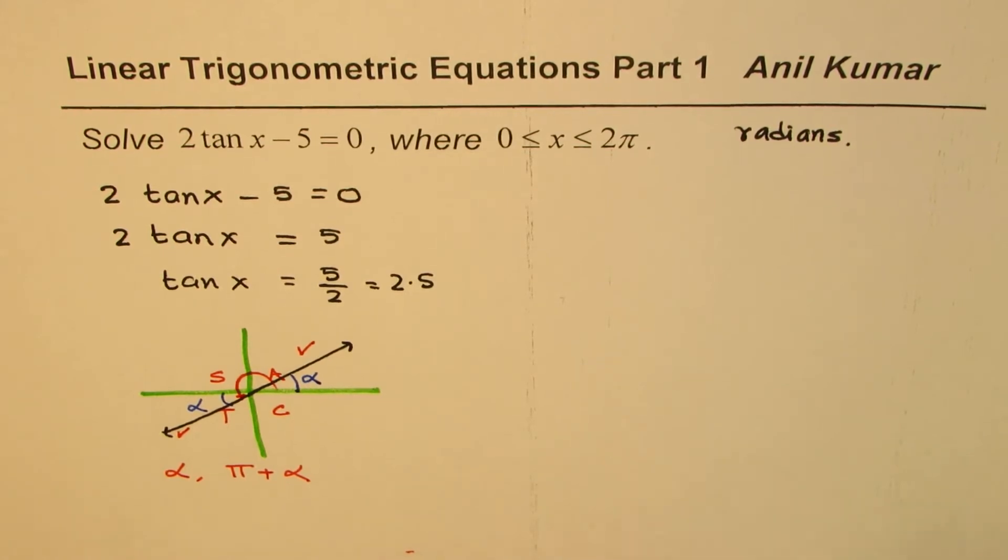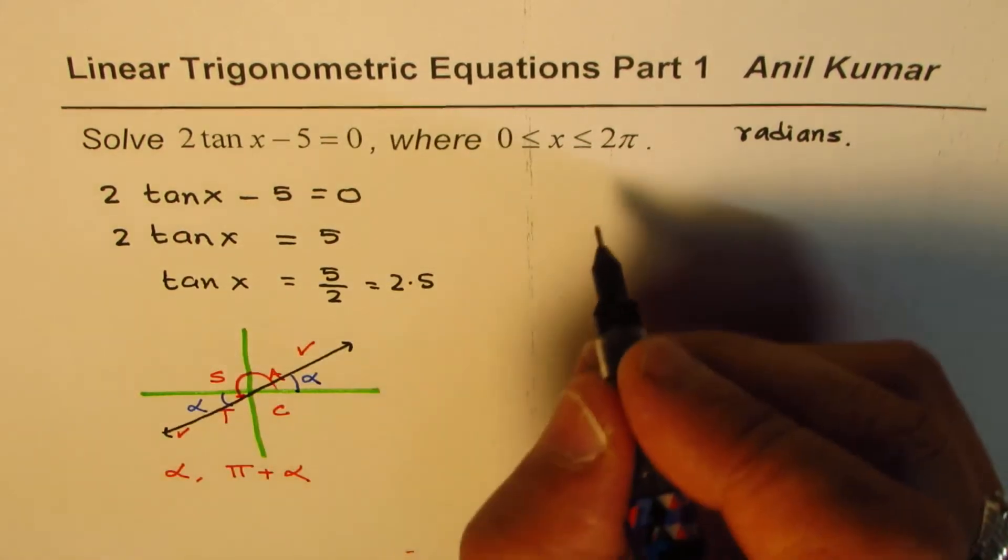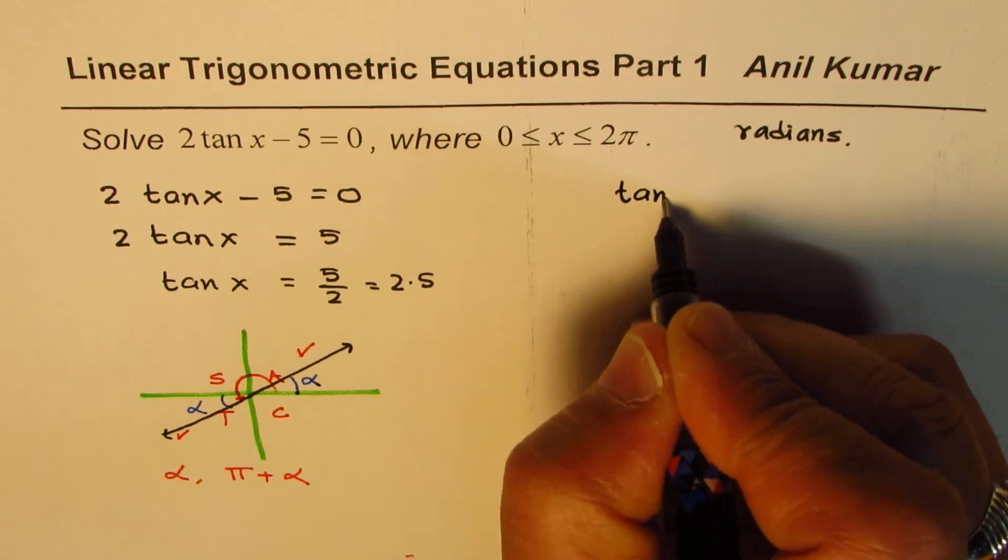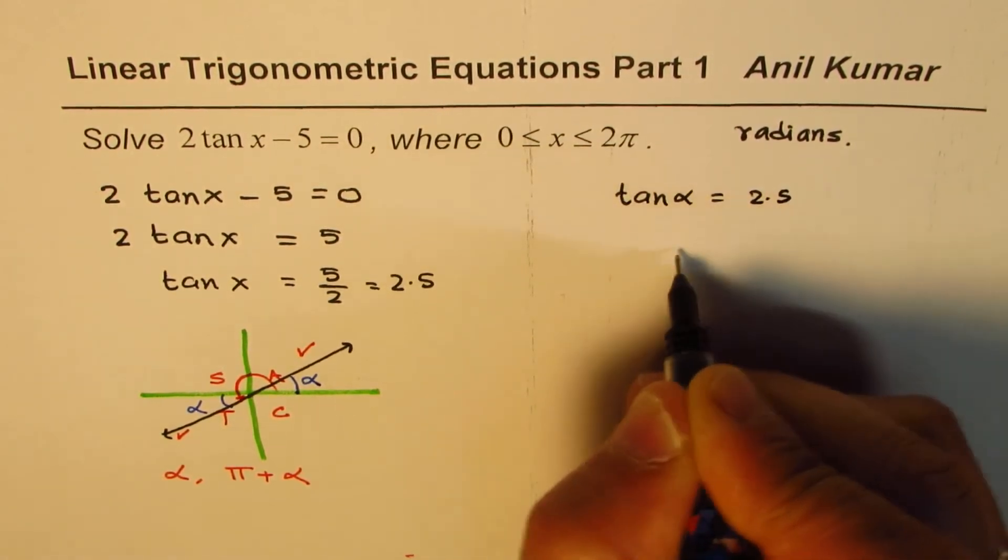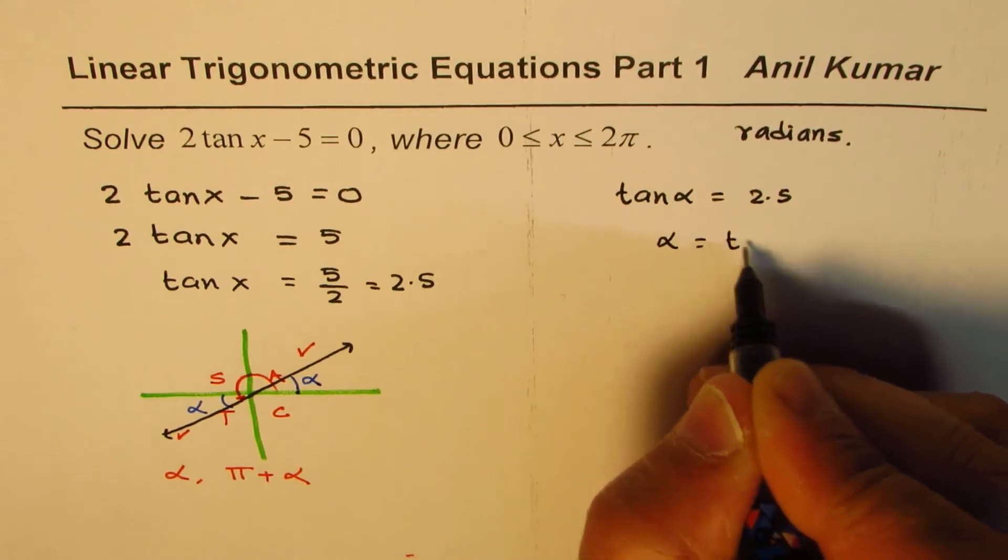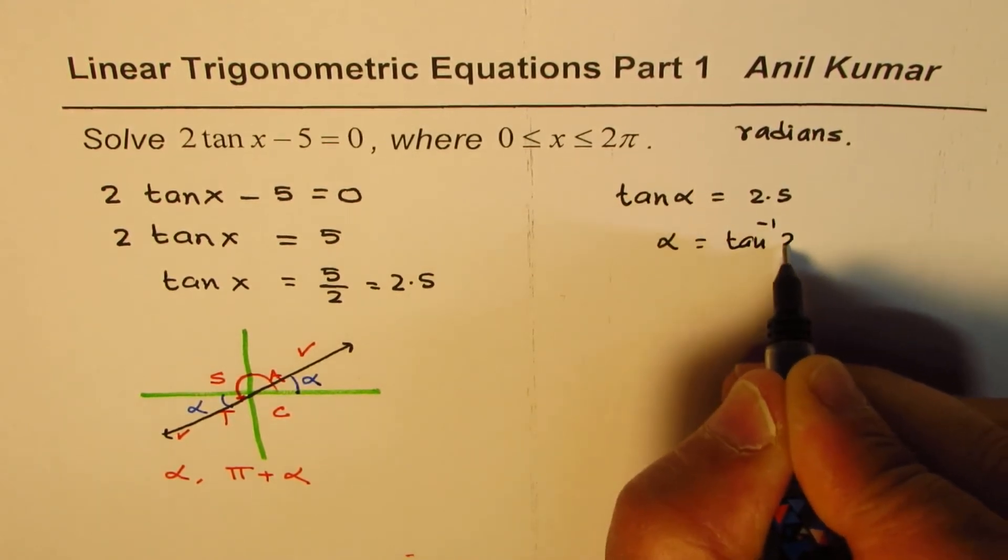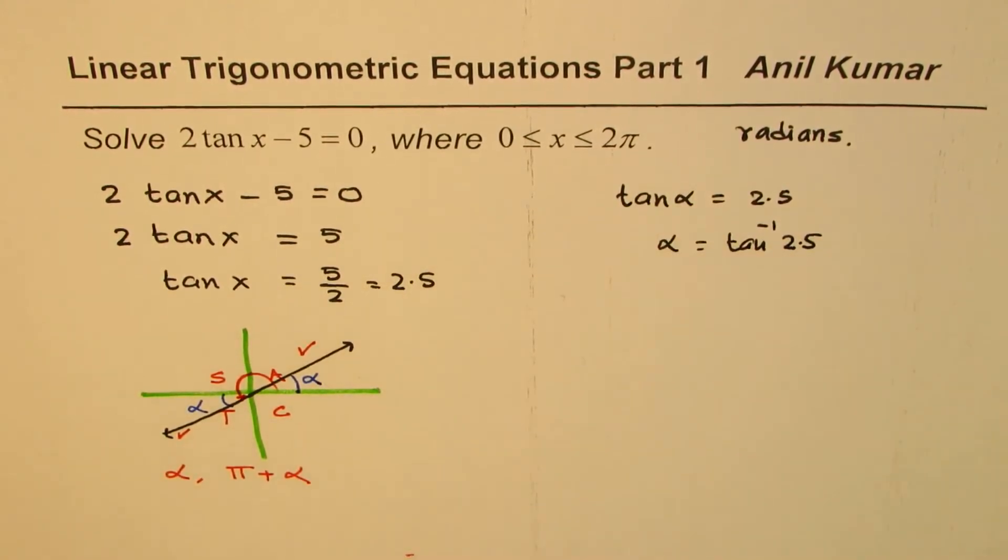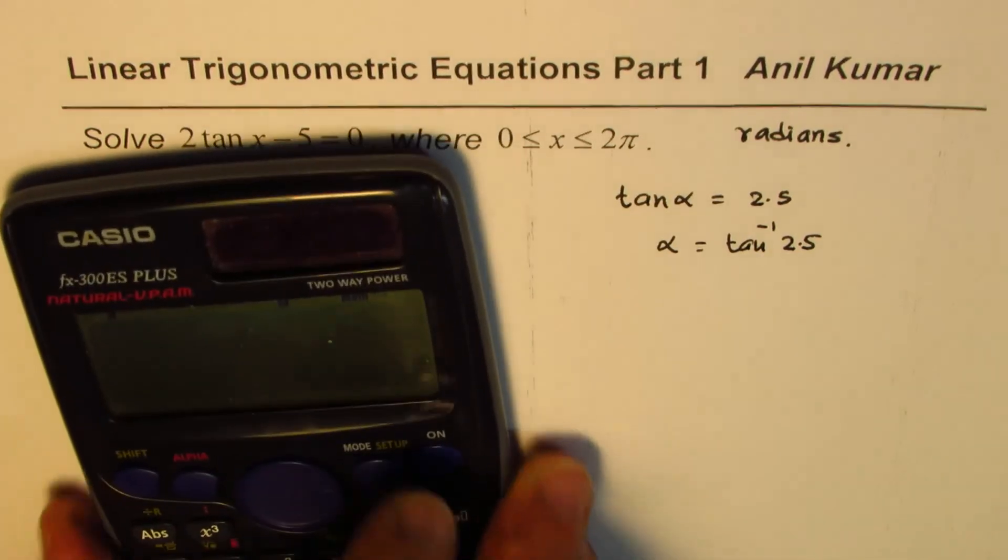So let's use the calculator. So what are we looking for? We are looking for tan alpha equals 2.5, or alpha equals tan inverse of 2.5. So let's use the calculator. It should be set in radians.